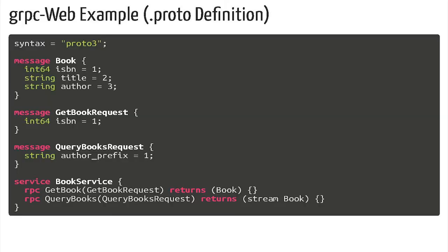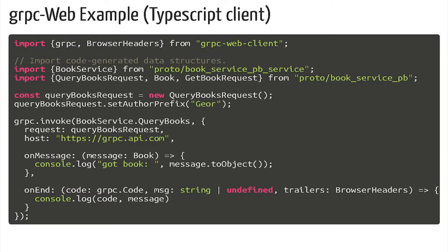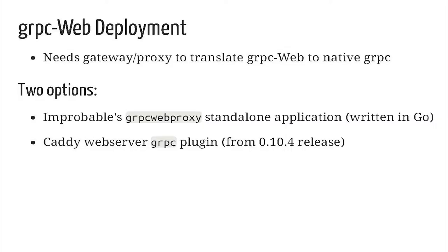Here's an example of the proto-file — a book service where you can get one book or query one or more books depending on the prefix. The TypeScript that gets generated can be imported, and you'll see gRPC invoke is what actually calls the service. To deploy this, you currently have two options: the standalone Go application written by Improbable, or you can use Caddy from version 0.10.4. Caddy is a new web server — something you should look at; it's quite interesting. It has a gRPC plugin that can do this proxy for you as well.